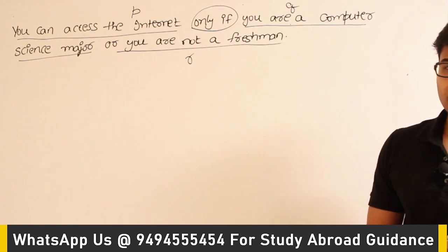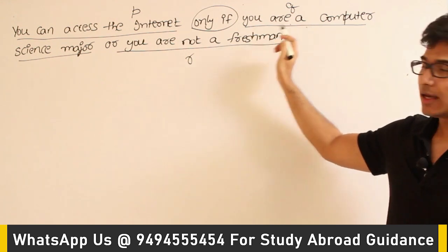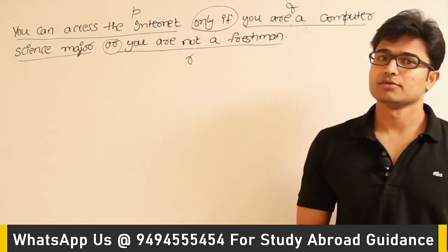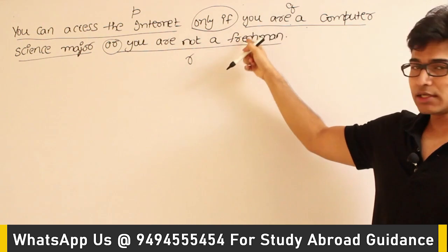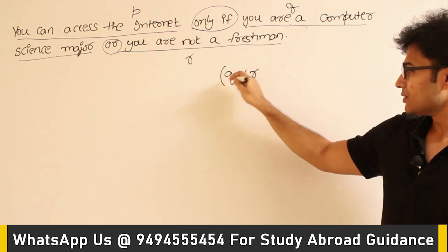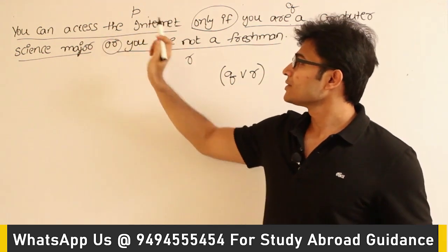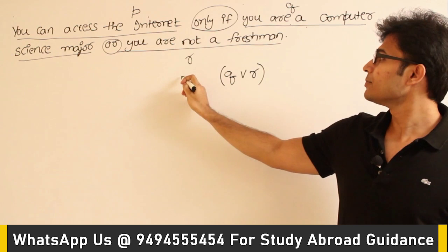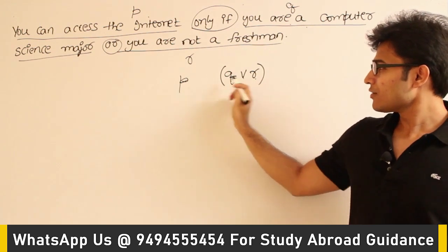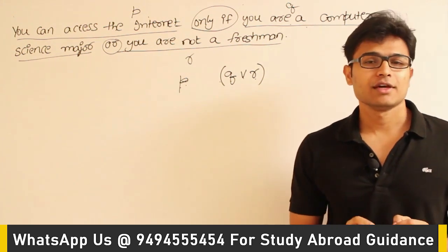Using the connectives — you can see that Q and R are connected, so there is a connective between them. You can represent those two statements as Q or R. Now P represents 'you can access the internet.' The only confusion you have is whether Q or R implies P, or P implies Q or R — that is the confusion.